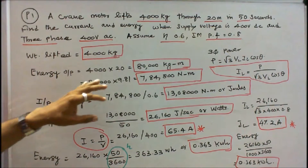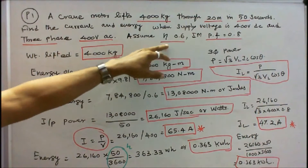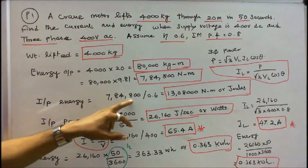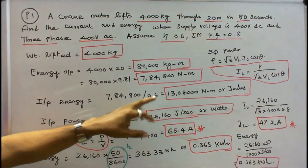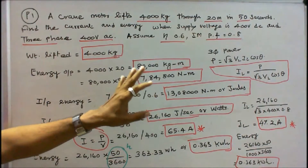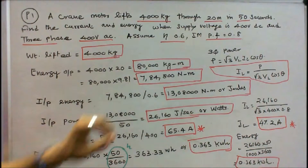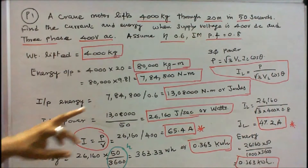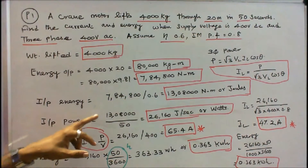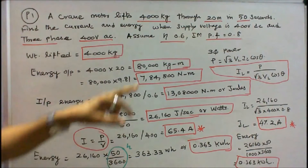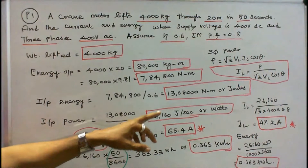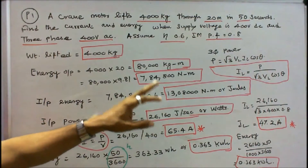Input energy is equal to output divided by efficiency. Efficiency is given 0.6. Therefore 7,84,800 divided by 0.6 is equal to 13,08,000 Newton-meter or joules. Input power is equal to 13,08,000 divided by 50 seconds, that is equal to 26,160 joules per second or watts.